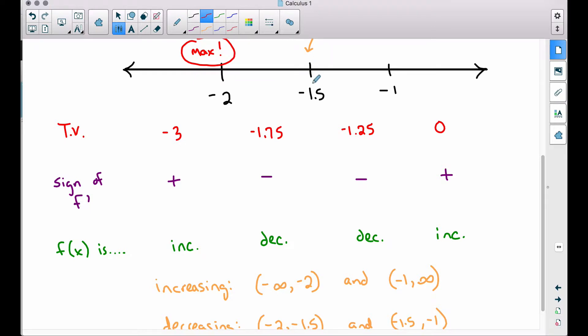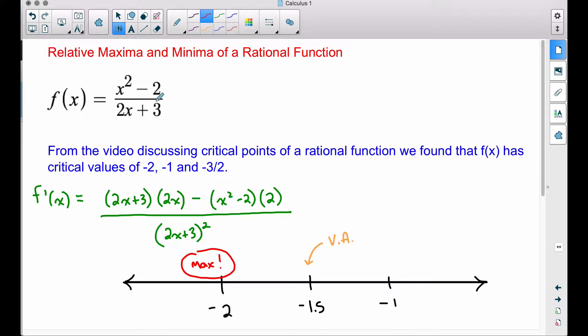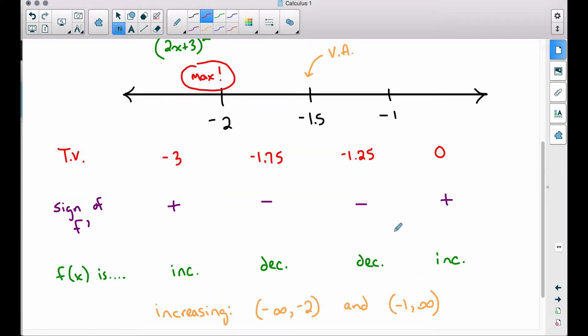We have a discontinuity when x is equal to negative 1.5. If you were to plug negative 1.5 back into your denominator, we would be dividing by 0, which leads to a vertical asymptote in this case. But then we have this interval on the right hand side of negative 1.5. The function changes from a decreasing function to an increasing function. When a function changes from decreasing to increasing, we have a minimum, and in this case we have a minimum when x is negative 1.